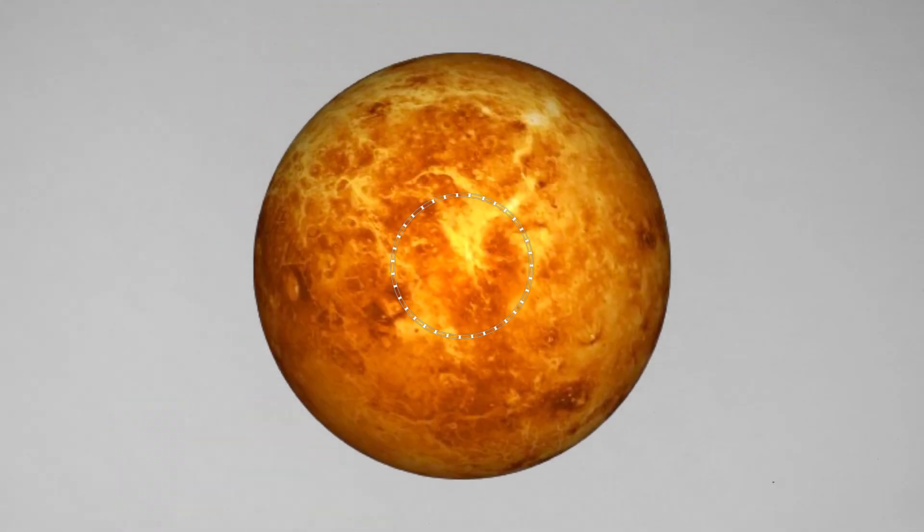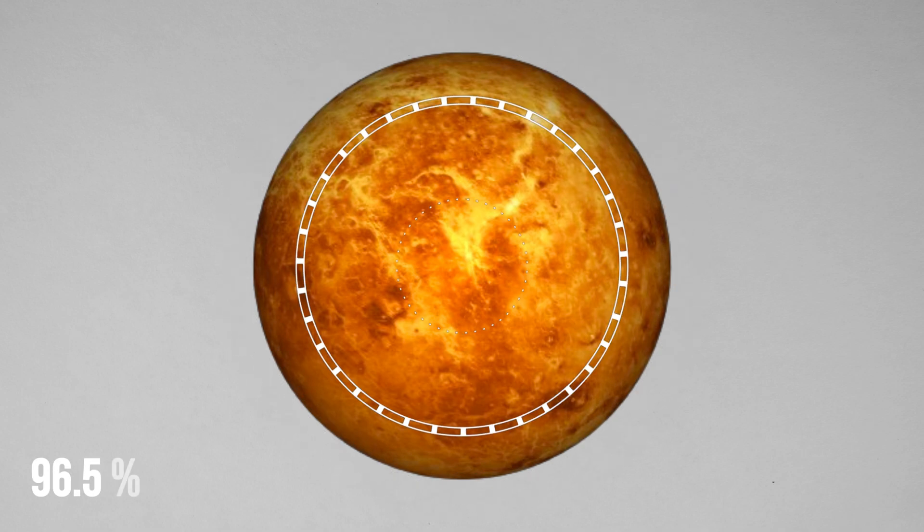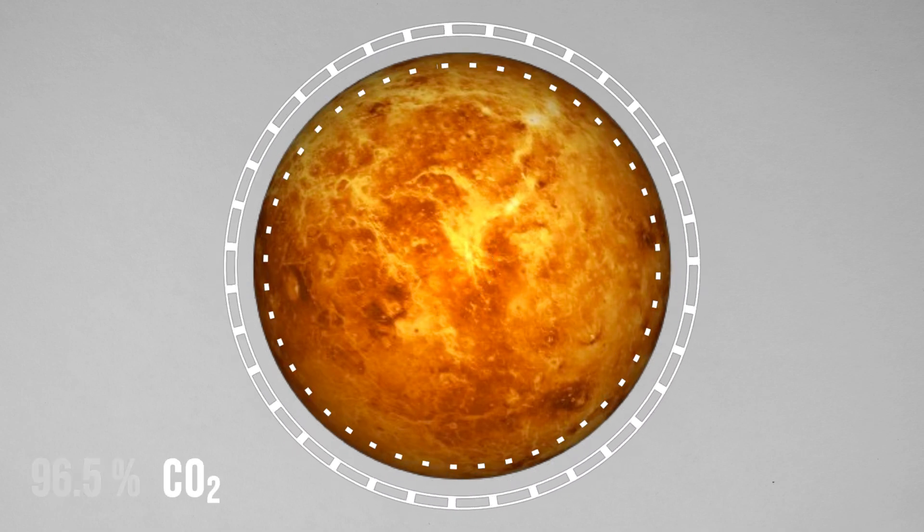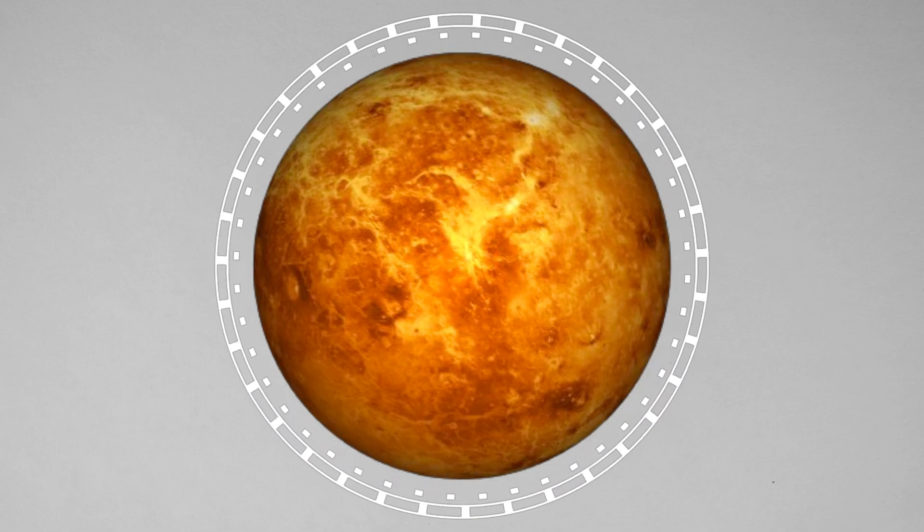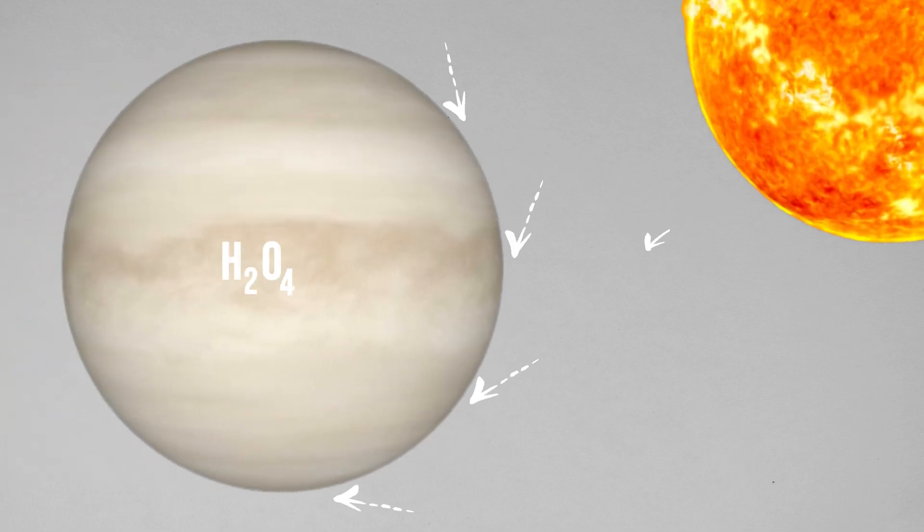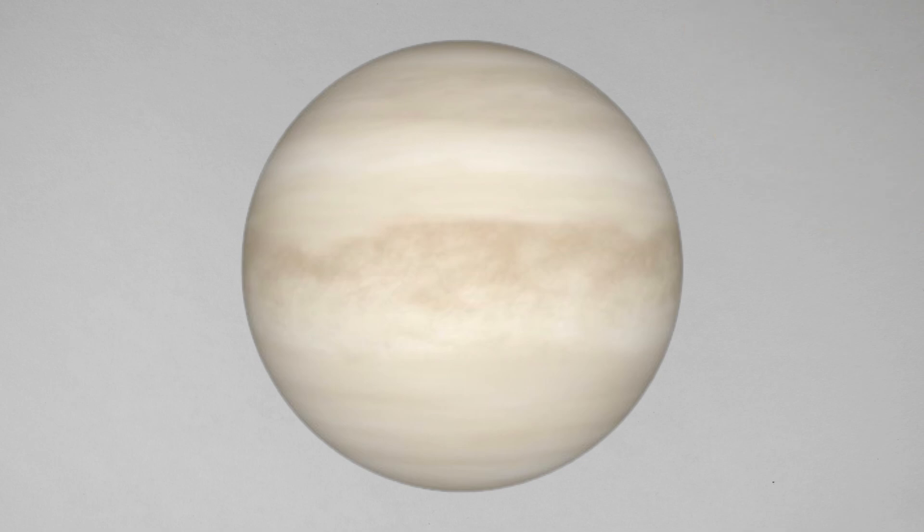Venus's atmosphere is composed of about 96.5% carbon dioxide, a greenhouse gas that traps heat. Thick clouds of sulfuric acid also reflect sunlight, but the CO2 in the atmosphere keeps the heat from escaping back into space.